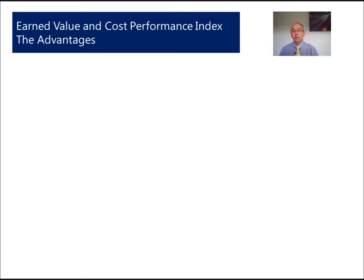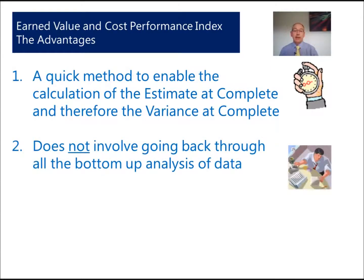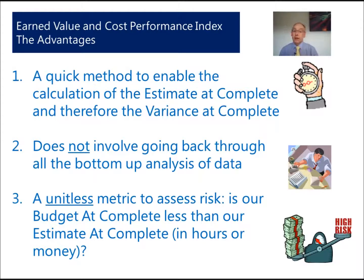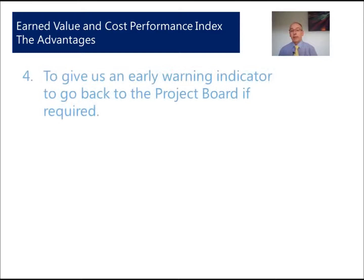There are six advantages to using CPI. The first three: most importantly, it is a quick algorithm to calculate the new estimate at complete — we know our budget at complete and want to know the estimate at complete and any variance. Second, it's quick — we use data we should already be gathering to calculate the EAC. Third, it's a unitless measure, so it doesn't have to be in money — it could be in hours — and it assesses the risk to our budget.